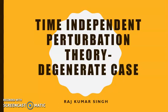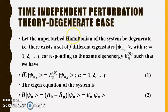In this lecture we will discuss time independent perturbation theory for degenerate cases. Let the unperturbed Hamiltonian of the system be degenerate. By degeneracy we mean that there exist a set of f different eigenstates |ψ_nα⟩, with α equal to 1, 2, 3, and so on to f, corresponding to the same eigenenergy E_n^0, such that H^0 |ψ_nα⟩ = E_n^0 |ψ_nα⟩ for α = 1, 2, 3, ... f. Let this be equation 1.